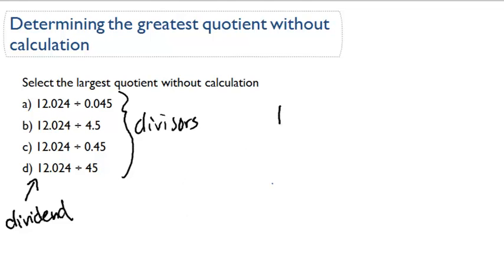Here's the rule: the larger the divisor, the smaller the quotient.